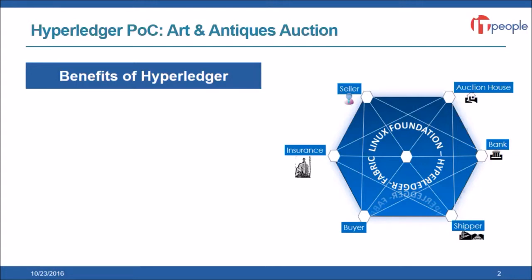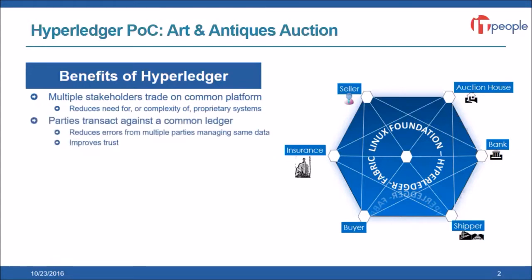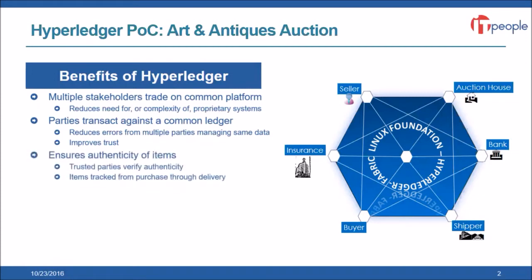We wanted to build it as a blockchain application. We think it has benefits there because blockchain would allow multiple stakeholders to trade on a common platform. They transact against a common ledger. The blockchain can be used to ensure the authenticity of items and to track them over time. The Fabric blockchain in particular enables parties to have private contracts between them, which is a bit different than other blockchain technologies but might be valuable in this kind of scenario.